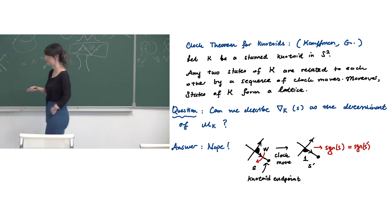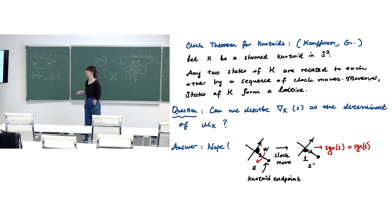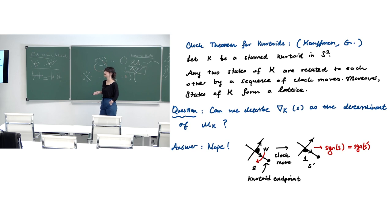For now the state sum polynomial is the permanent of an incidence matrix, but we cannot describe it as a determinant. The question remains open: can we describe the state sum polynomial as the determinant of some other matrix, or give a determinant description for this polynomial?